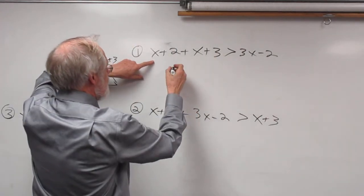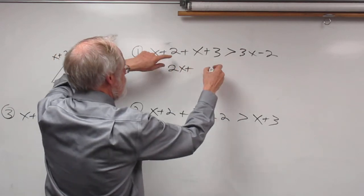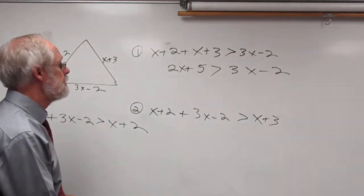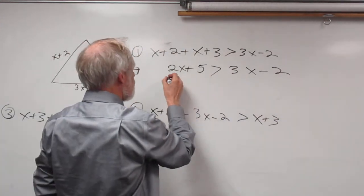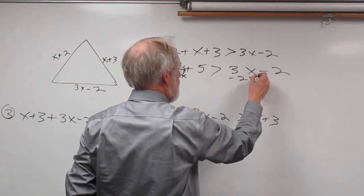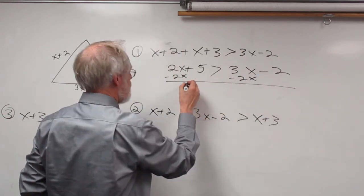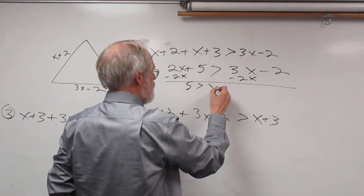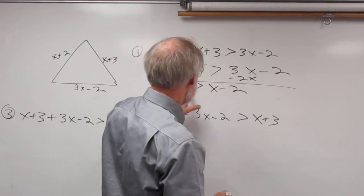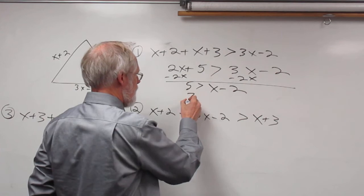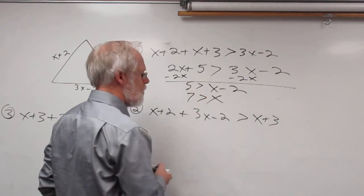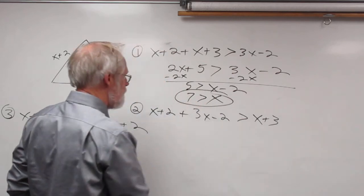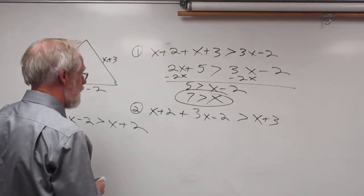Let's solve each of those. For the first inequality: 2x plus 5 must be greater than 3x minus 2. Subtracting 2x from both sides gives 5 must be greater than x minus 2. Adding 2 to both sides, I get 7 must be greater than x, so x must be less than 7. There's one of our three parameters: x must be less than 7.